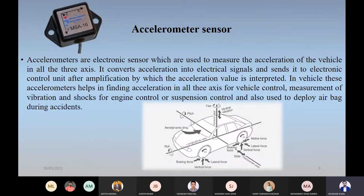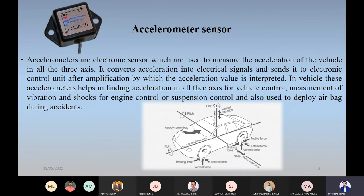This accelerometer sensor does not provide acceleration about the axis — it won't provide yaw, pitch, and roll — but it will provide the lateral, horizontal, vertical, and longitudinal acceleration. The accelerometer sensor senses the acceleration in each axis and converts that into electrical signals. These electrical signals are sent to the ECU, which is a computer attached to the vehicle. Based on these acceleration values, there are different controls like stability control, measurement of vibrations and shocks for active suspension, or even knock sensors of the engine, which work on this principle.